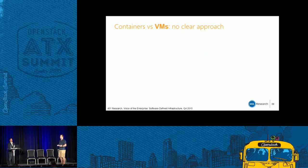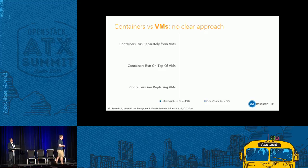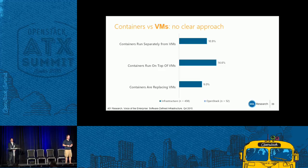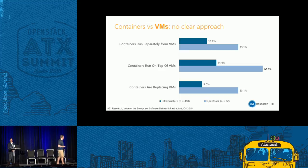We also asked how people are using containers relative to VMs. Three main alternatives: running them inside a VM, replacing VMs with containers, or creating new workloads that run in containers. The most common approach is running containers inside a VM, but the majority are actually using them either instead of a VM or separately. In the OpenStack slice, the numbers are larger because there are more container users, but the pattern is exactly the same.